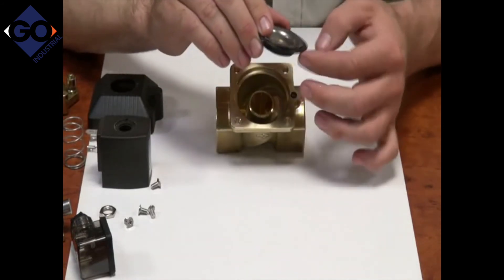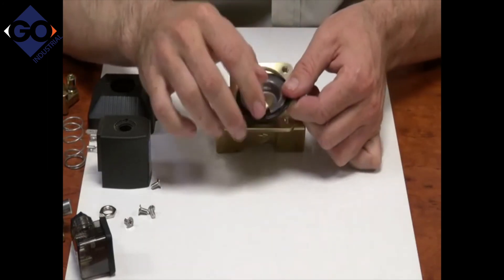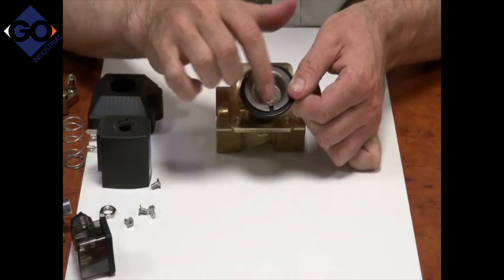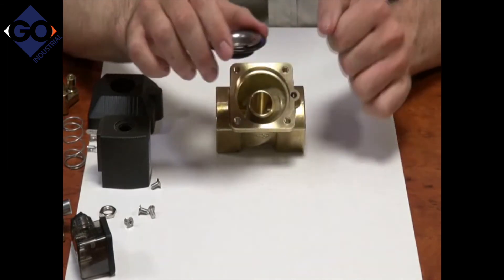Here's your diaphragm with a stainless steel plate. This is one of your bleed holes which lets pressure onto the top of the diaphragm. You probably can't see it - it's a very minute hole. It's important for that to be free.